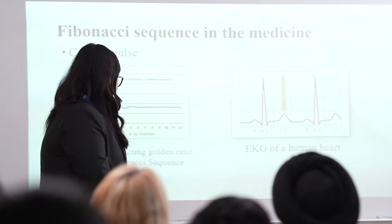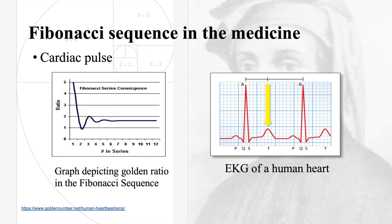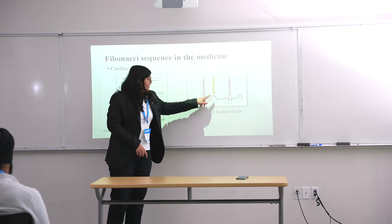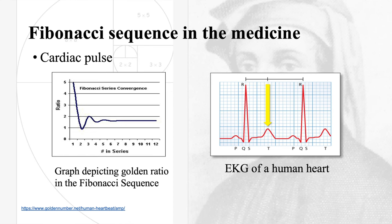Fibonacci sequence in medicine. Here we have the graph that depicts the golden ratio approximations that is shown in the Fibonacci sequence. And here is the EKG of a human heart. This EKG resembles the first part of this graph. So even a human heartbeat follows the Fibonacci sequence.